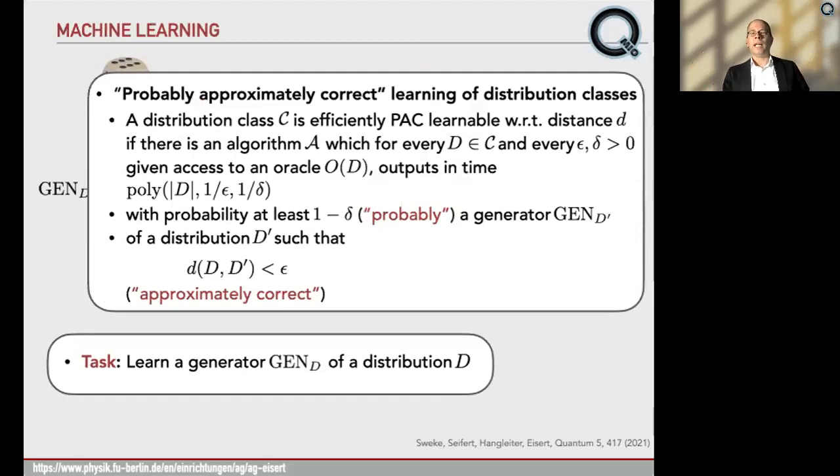The one technical slide I have is this one on probably approximately correct learning, which is basically the same thing where one asks that the learner with probability of at least 1 minus delta, so probably, finds a generator of a distribution, D prime, that is, in the right sense, close to the original distribution, so it's approximately correct.